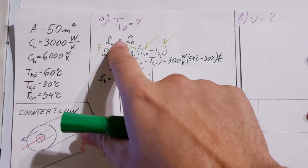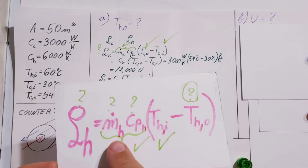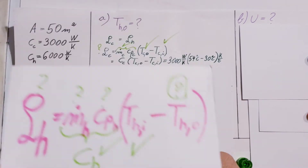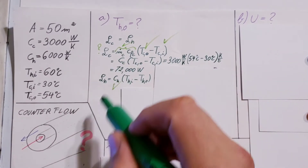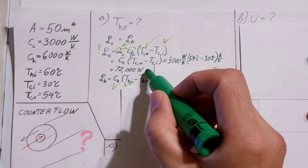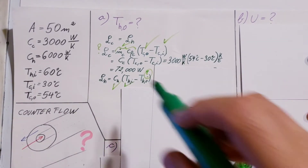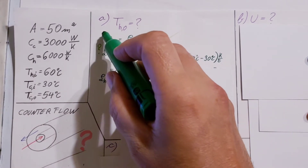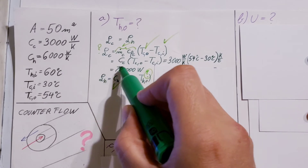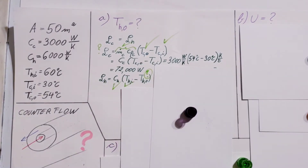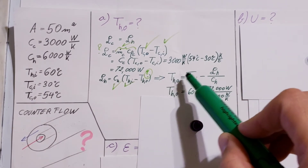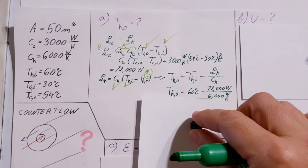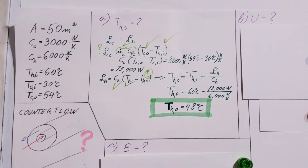Now we utilize Q_H = Q_C and go back to our hot fluid formula. We have C_H given, the hot inlet temperature given, and the heat transfer rate is now known to be 72,000 watts. We solve for the outlet temperature of the hot fluid and find that the hot fluid exit temperature is 48 degrees Celsius.